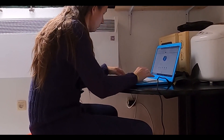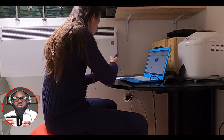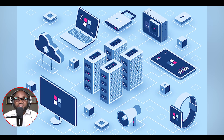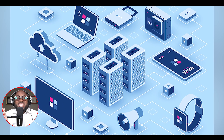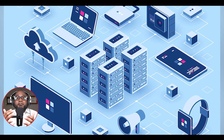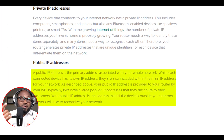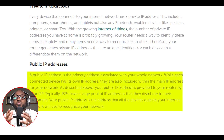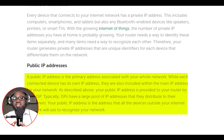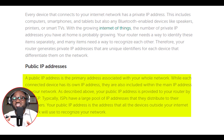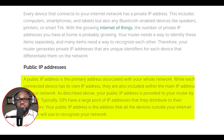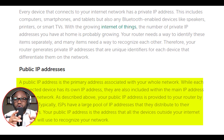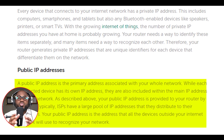Then we have a public IP address. A public IP address is the primary address associated with your whole network. While each connected device has its own IP address, they are also included within the main IP address for your home network. As described previously, your public IP address is provided to your router by your ISP. Typically, ISPs have a large pool of IP addresses that they distribute to their customers. Your public IP address is the address that all the devices outside your internet network will use to recognize your network.